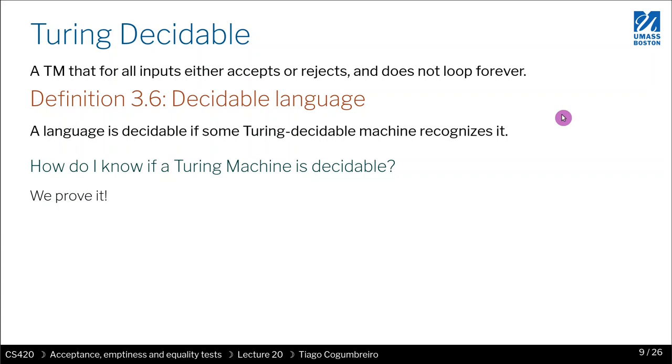So how do we know that a Turing machine is decidable? We need to prove it, and that's essentially what we're going to do in the next following lesson.